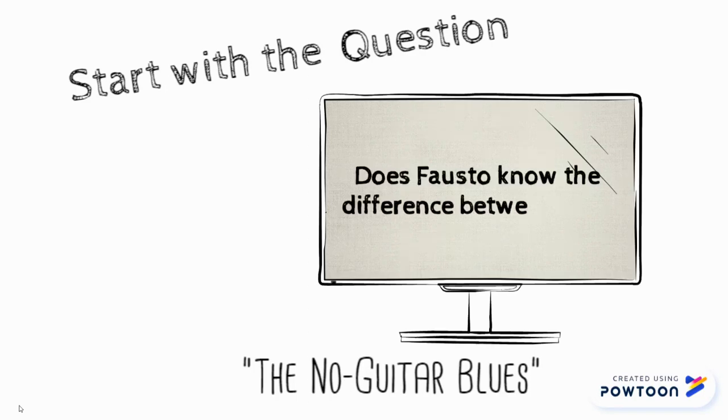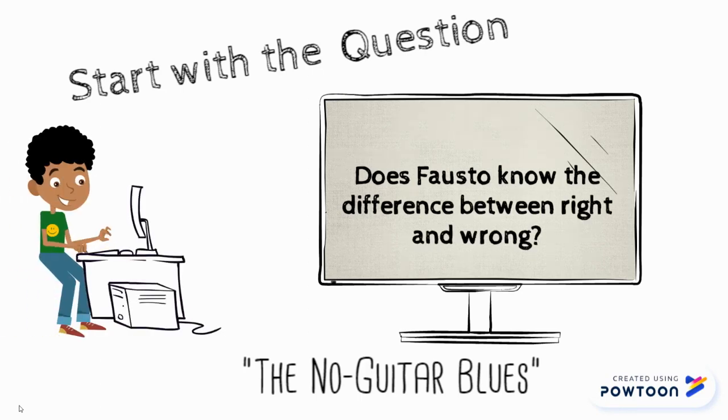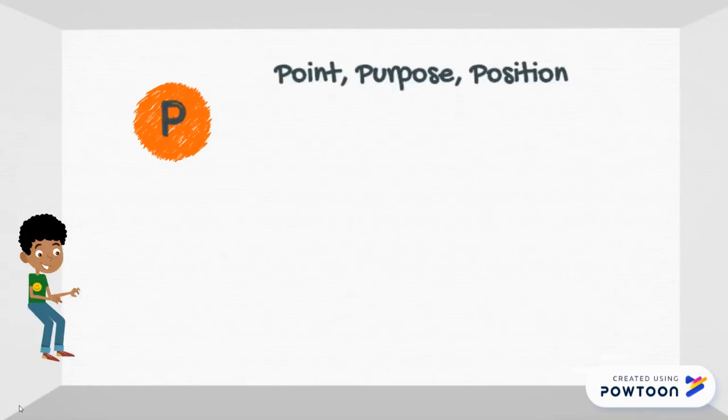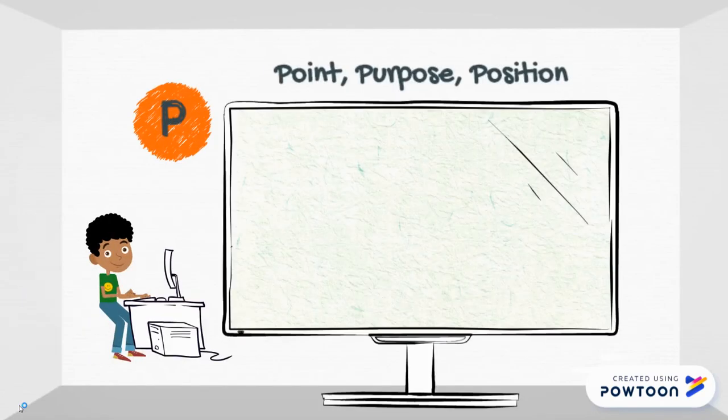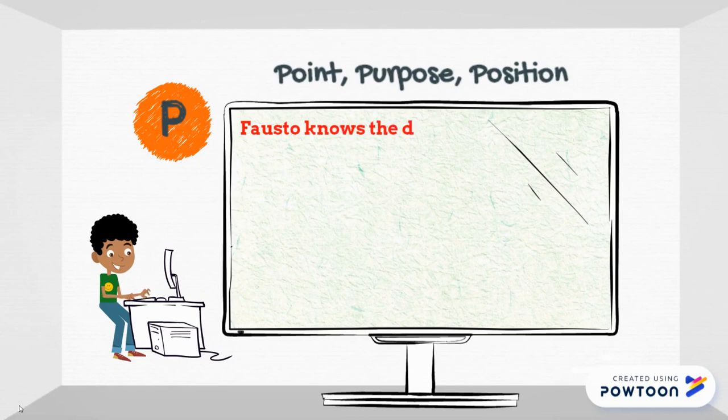Let's look at the evidence. First, let me state my claim, or my point. Fausto knows the difference between right and wrong. That's what I'm going to claim.